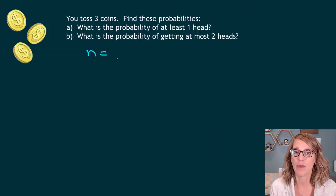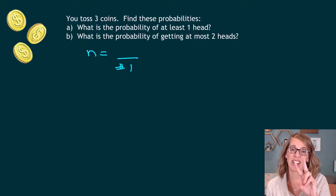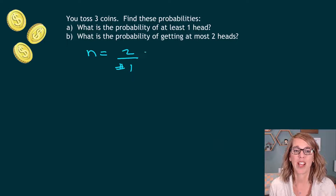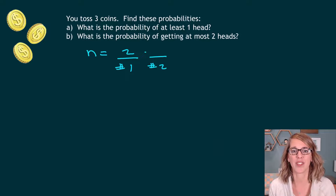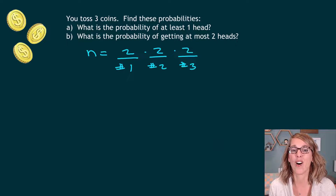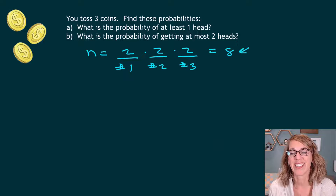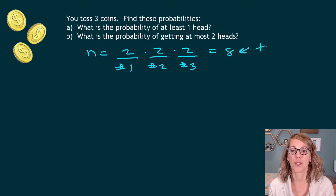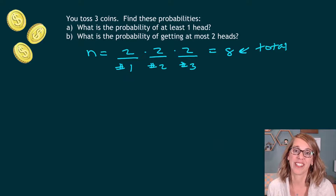Using the multiplication principle, the number of ways the first coin can land — heads or tails — is two, times the number of ways the second coin can land, also two, times the number of ways the third coin can land, also two. Two times two times two is eight. This is our total number of possible outcomes and will be our denominator.